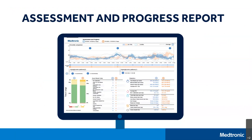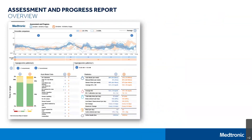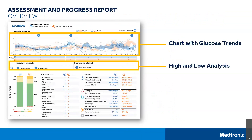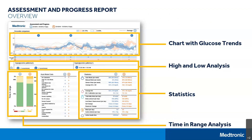We will begin by looking at the Assessment and Progress Report. This is one of my favorite reports as it gives a broad overview of your information. There are four major sections I'd recommend you take a look at: the glucose data trends, the high and low analysis, statistics that can help you understand changes between two time periods, and your time in range results, oftentimes referred to as TIR.